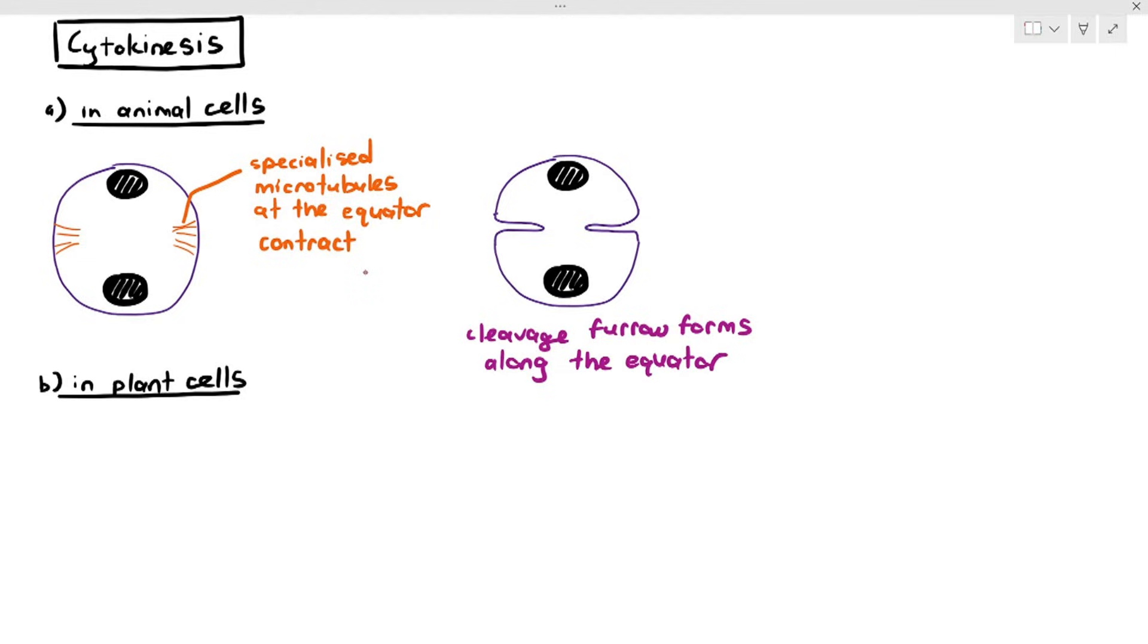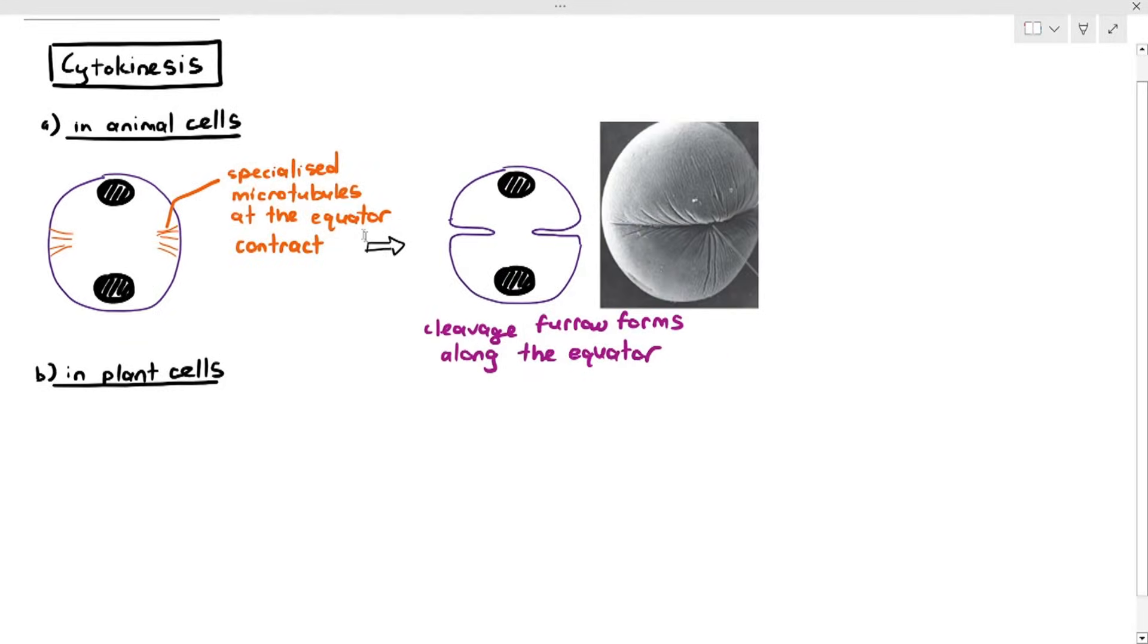This is a two-dimensional version of it, but if you want to see a scanning electron micrograph of a cleavage furrow, it looks like that. You can see that it's forming a kind of mouth, pursing the lips, where it's forming on the equator on one side. It's also happening on the other side, but we can't see it because that's on the opposite end.